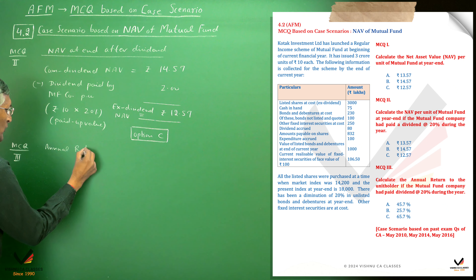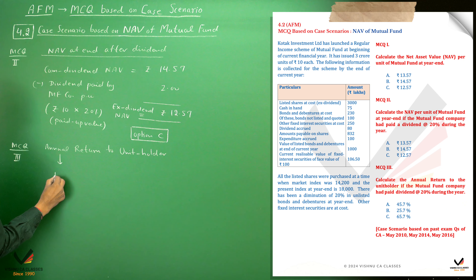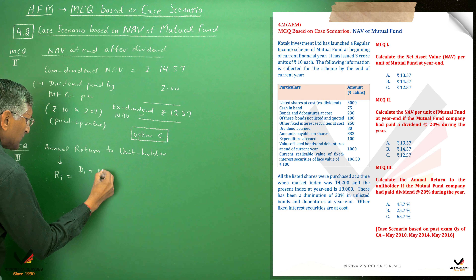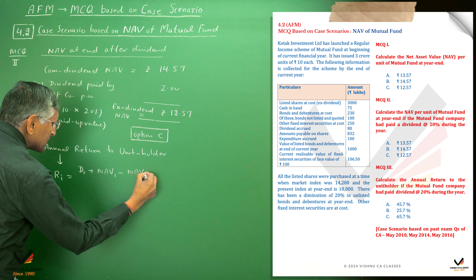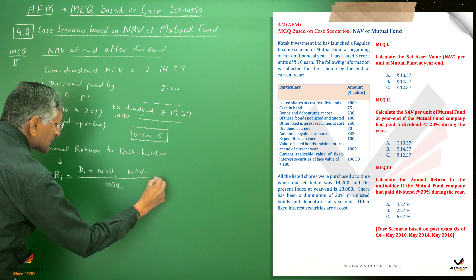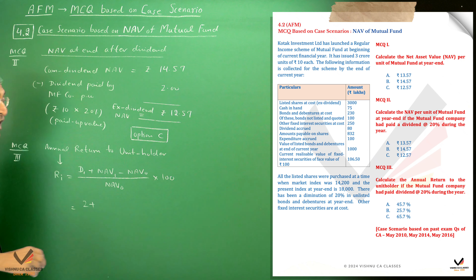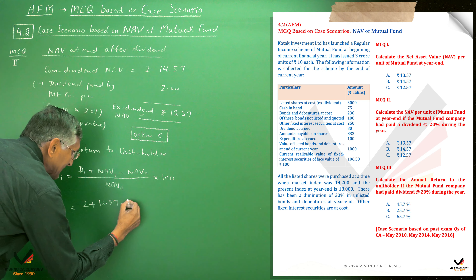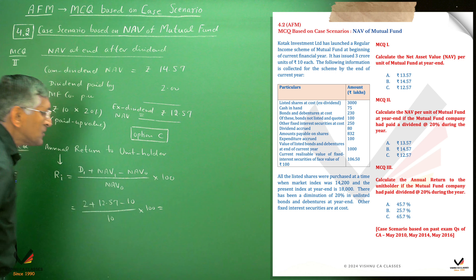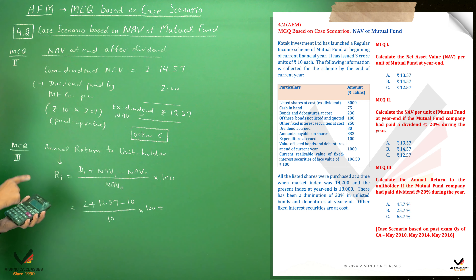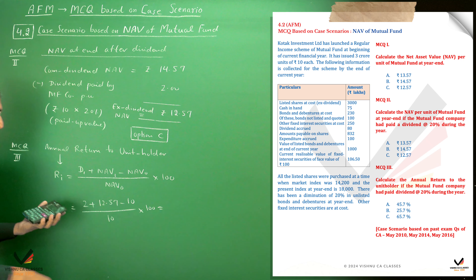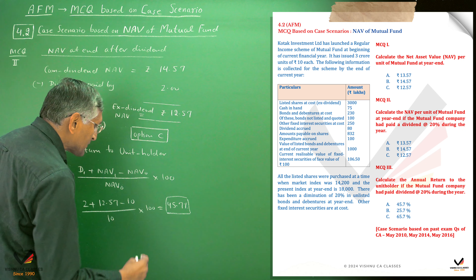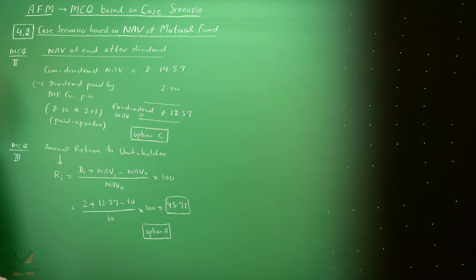For MCQ number 3, we have to calculate the annual return to the unit holder. The formula is: Return = (dividend received + closing NAV after dividend - opening NAV) / opening NAV × 100. Dividend = rupees 2, closing ex-dividend NAV = 12.57, opening NAV = 10 (units issued at beginning of year). Return = (2 + 12.57 - 10) / 10 × 100 = 4.57 / 10 × 100 = 45.7%. Answer is Option A.